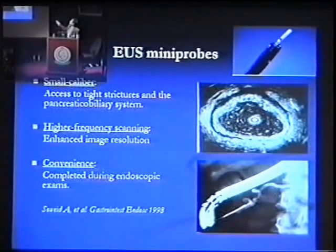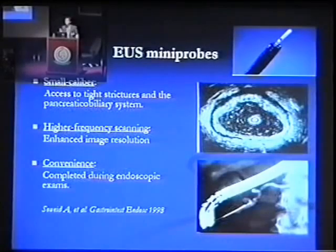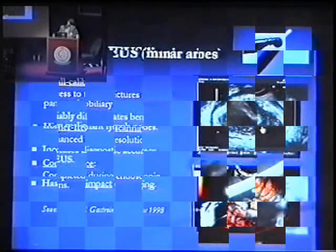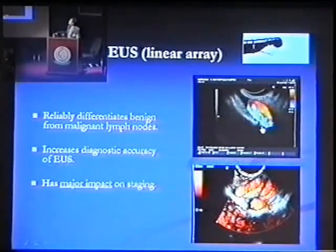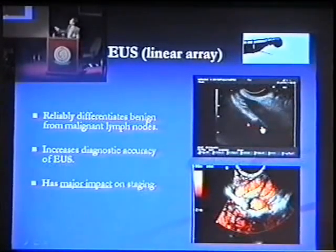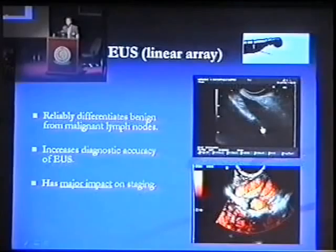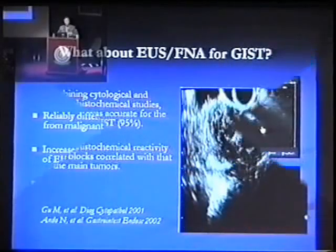The small caliber of the ultrasound probe would let you go inside structures including the pancreatic duct. It's convenient — it can be done during the same endoscopic event — and it provides the ability to pass the needle under direct ultrasound guidance. It also provides Doppler capability, allowing you to differentiate a vessel from a node, or a different structure such as a duct.